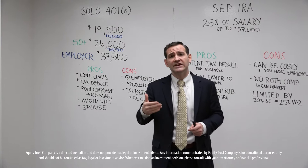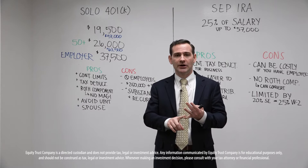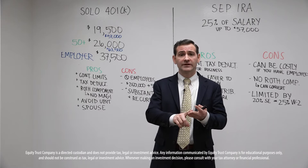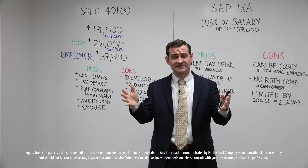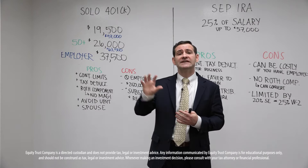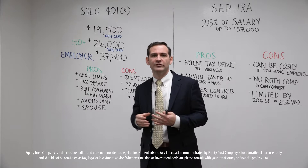Before we get into the contribution limits, a couple of items to discuss. To be eligible for a solo 401k, you have to have established earned income. Earned income is income that you are paying ordinary income taxes on — federal, state if applicable, local income taxes — and also payroll taxes, so self-employment taxes, Medicare, and Social Security. A lot of business owners might be familiar with filing a Schedule C and a Schedule SE. Ultimately, it's your net income, not your gross, that's going to be applied to these figures.